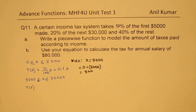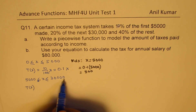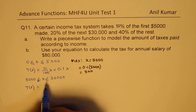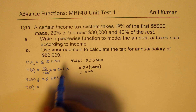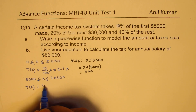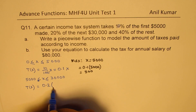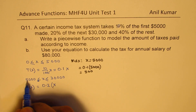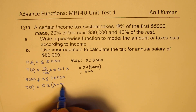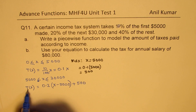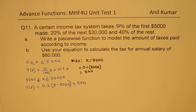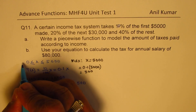So you pay $500 on the first $5,000, and on the balance you pay 20%. The tax rate in this interval is: $500 on the first $5,000, plus 20% — that is 0.2 — on everything earned more than $5,000. That is how you create the equation for the second slab.